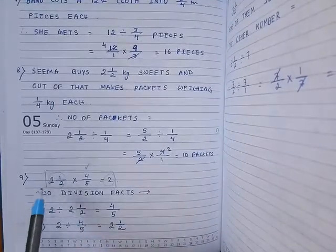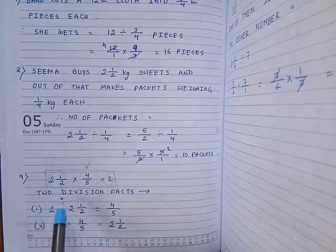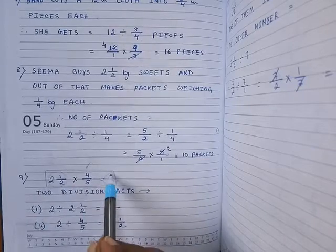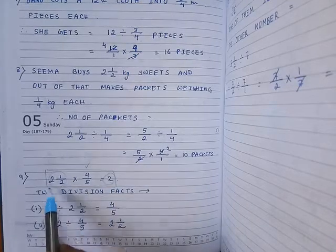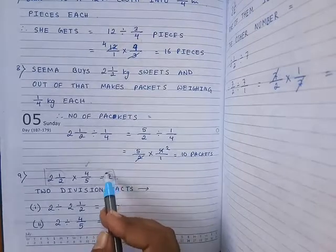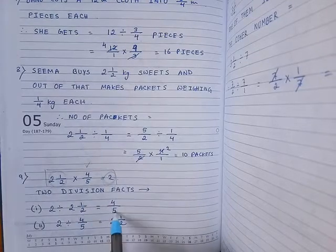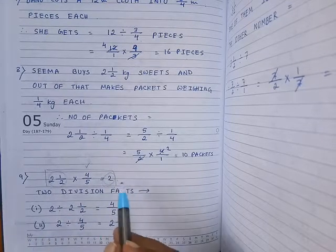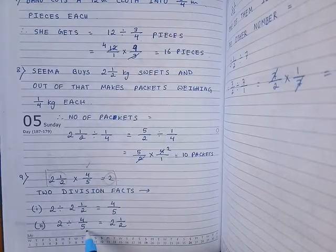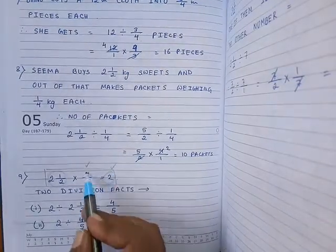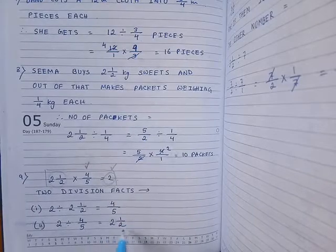Then, question number 9. 2 whole number 1/2 multiplied by 4/5 equals 2. You have to write down 2 division facts. First, write down the resultant number 2, divided by the first number 2 whole number 1/2. The remaining number is 4/5, so it will be equal to 4/5. For the next fact, write down 2 divided by 4/5. The remaining number is 2 whole number 1/2, so we will get 2 whole number 1/2.